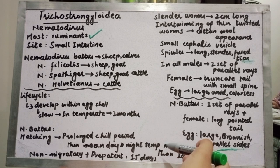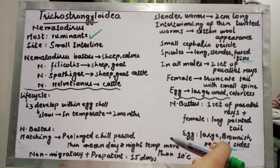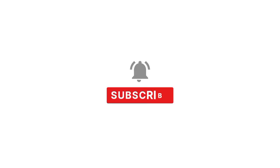This is a non-migratory life cycle. The pre-patent period is approximately 15 days. The main clinical sign of Nematodirus infection is profuse watery diarrhea.